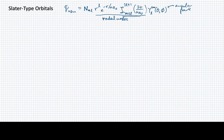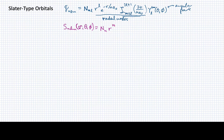So what we do instead is define — or rather, Slater defined — a new set of functions, which I'll denote with the letter capital S. It'll be dependent upon the same three quantum numbers, with a normalization constant. It'll have an r-dependent part, but now instead of r raised to the l power, it's r raised to the n minus 1. And then we'll have an exponential part and the spherical harmonics in theta and phi.